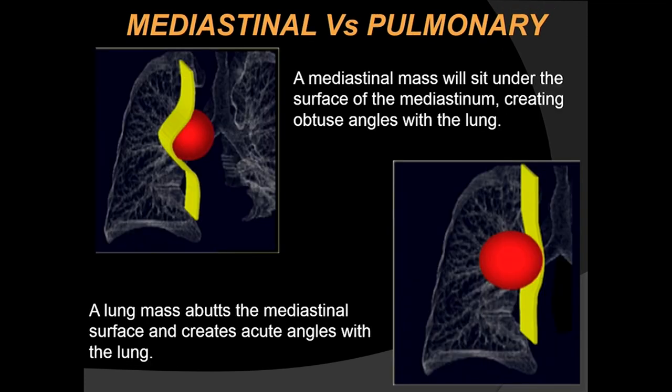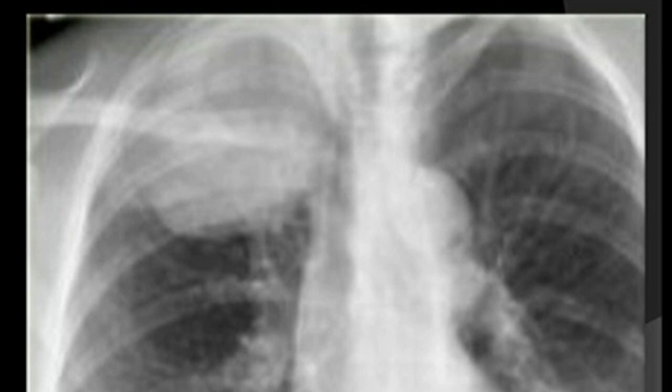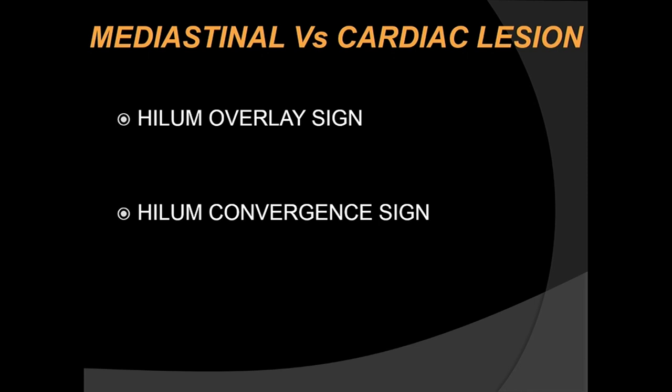Schematically, a mediastinal mass sits under the surface of the mediastinum and creates an obtuse angle with the lung, whereas a lung mass abuts the mediastinal surface and creates an acute angle. Radiographically, a mediastinal mass obliterating the right mediastinal border turned out to be a thymoma, while a lesion in the right upper zone forming an acute border with the mediastinum turned out to be a Pancoast tumor.